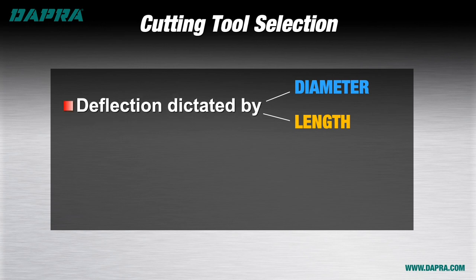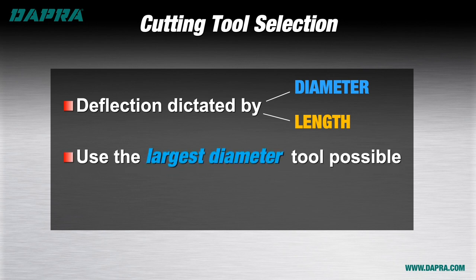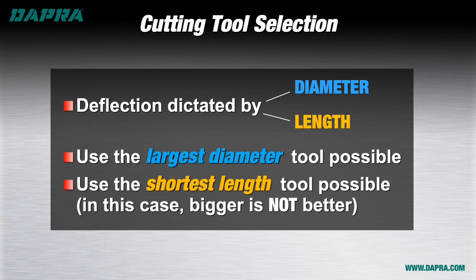Tool diameter and length are critical factors when dealing with tool deflection. Two things we can do to help are to use the largest tool diameter and the shortest length cutting tool that the application will allow. For optimum efficiency in deep pocket or long-reach milling, it's best to do initial roughing with larger and shorter tools, progressing gradually to smaller and longer tools only when and where necessary.